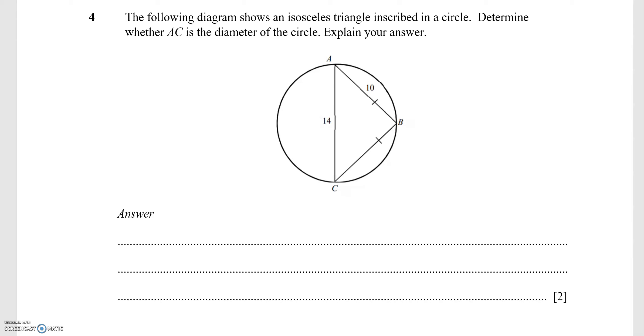Now for this question, a few pieces of information are given. We know that AB equals the length of BC, which is 10 units, and the length of AC is given as 14 units.